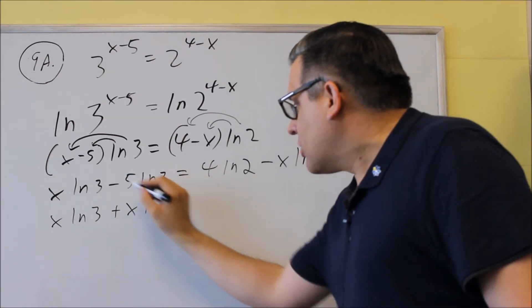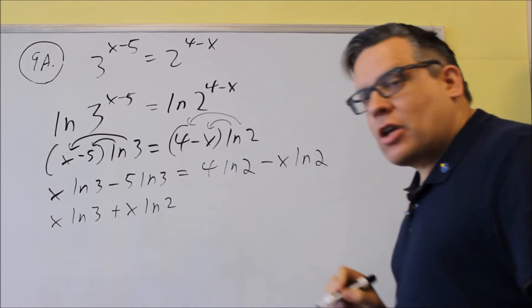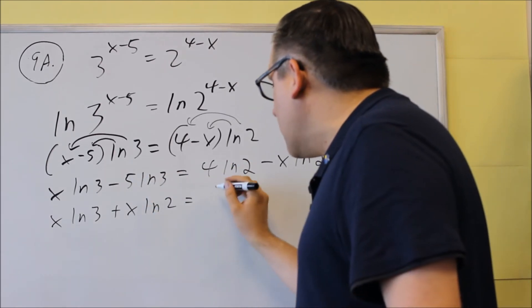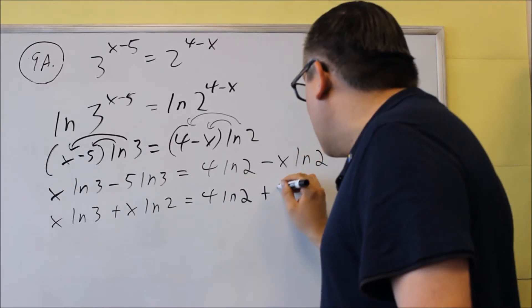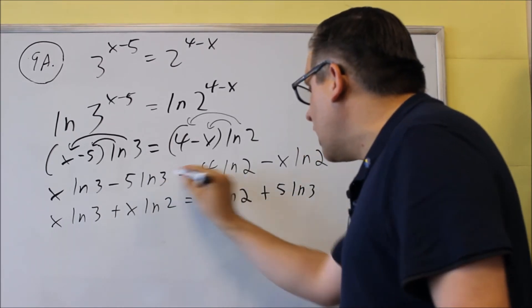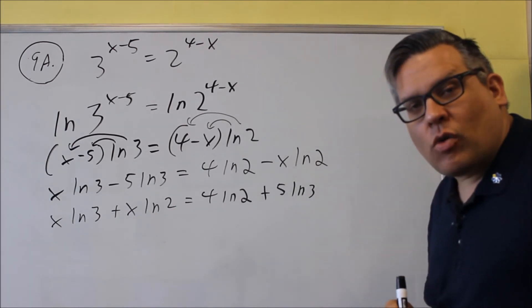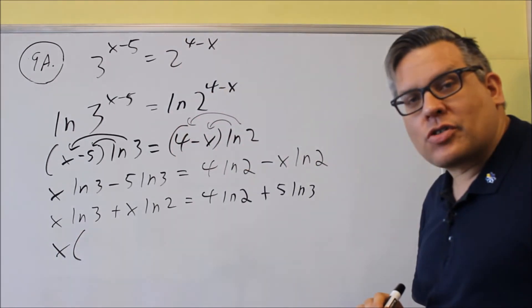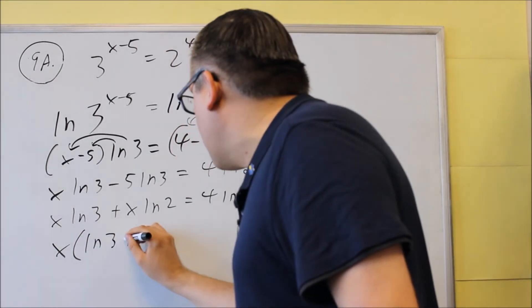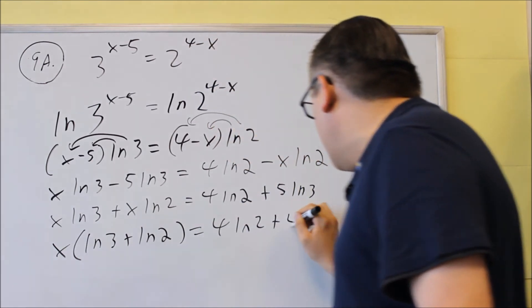This other one, since it doesn't have an x in it, I'm going to move that across the equal sign. When I do that, that's going to become positive also. So I get 4 ln 2, and I'm adding a 5 ln 3, because I move that across the equal sign. The reason why you want to get all the x's on one side is because then you can factor out a common factor, which is going to be the x there. And you get natural log of 3 plus natural log of 2, and then you have the rest of it.